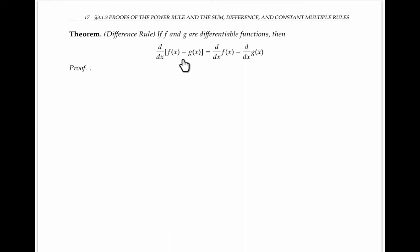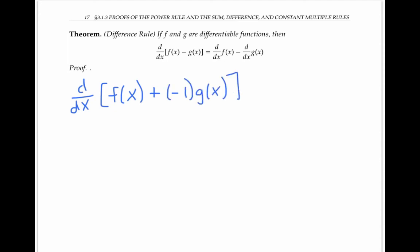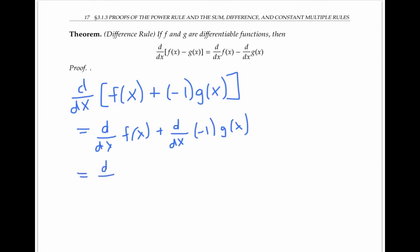The difference rule can be proved just like the sum rule, by writing out the definition of derivative and regrouping terms. Or we can use a shortcut and combine two previous rules: think of f(x) minus g(x) as f(x) plus (−1)·g(x), then use the sum rule to rewrite this as a sum of derivatives, and then use the constant multiple rule to pull the constant −1 out. That gives us exactly what we wanted to prove.